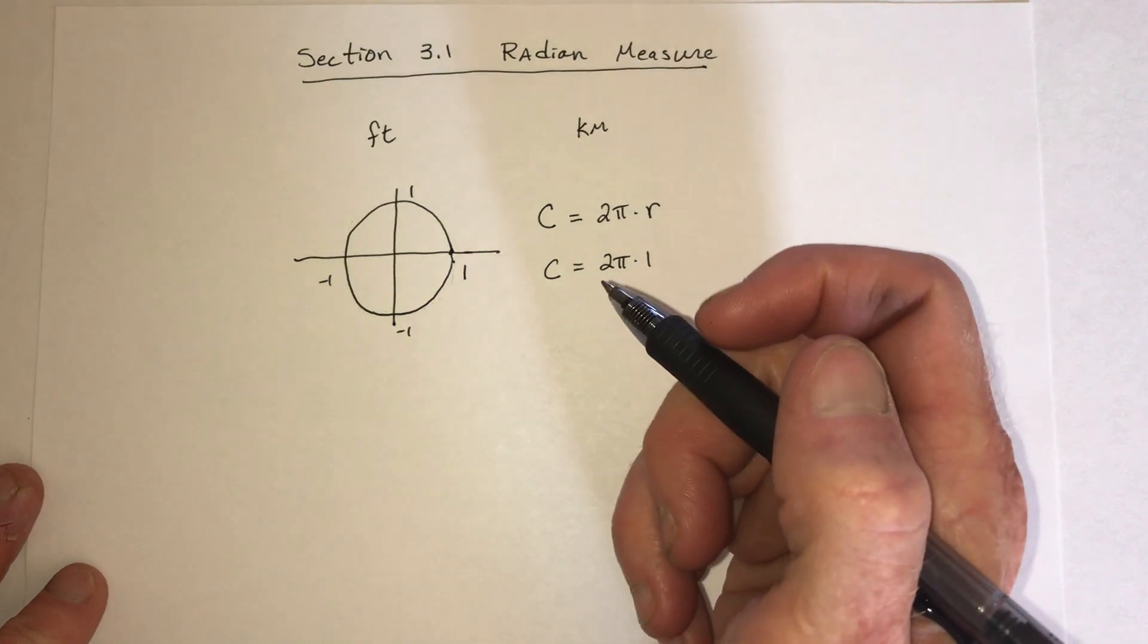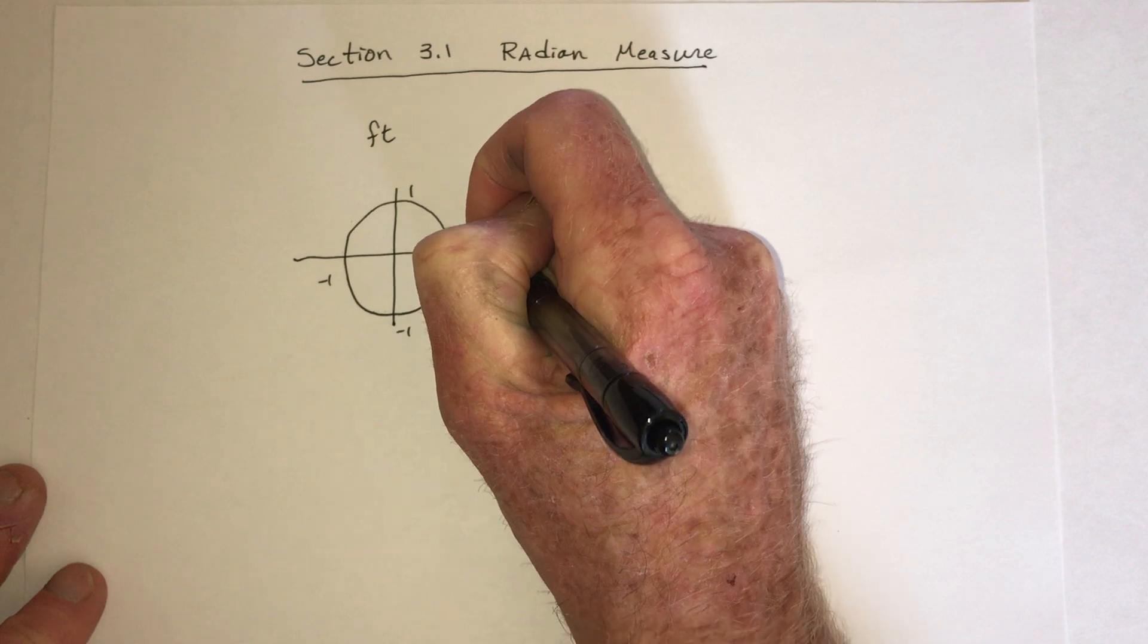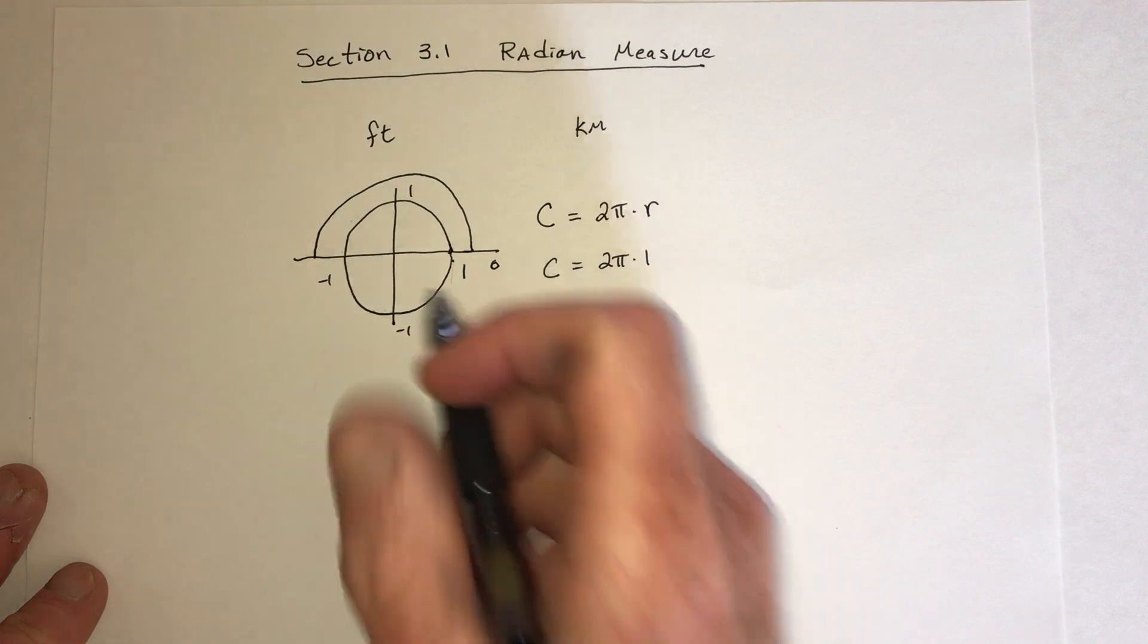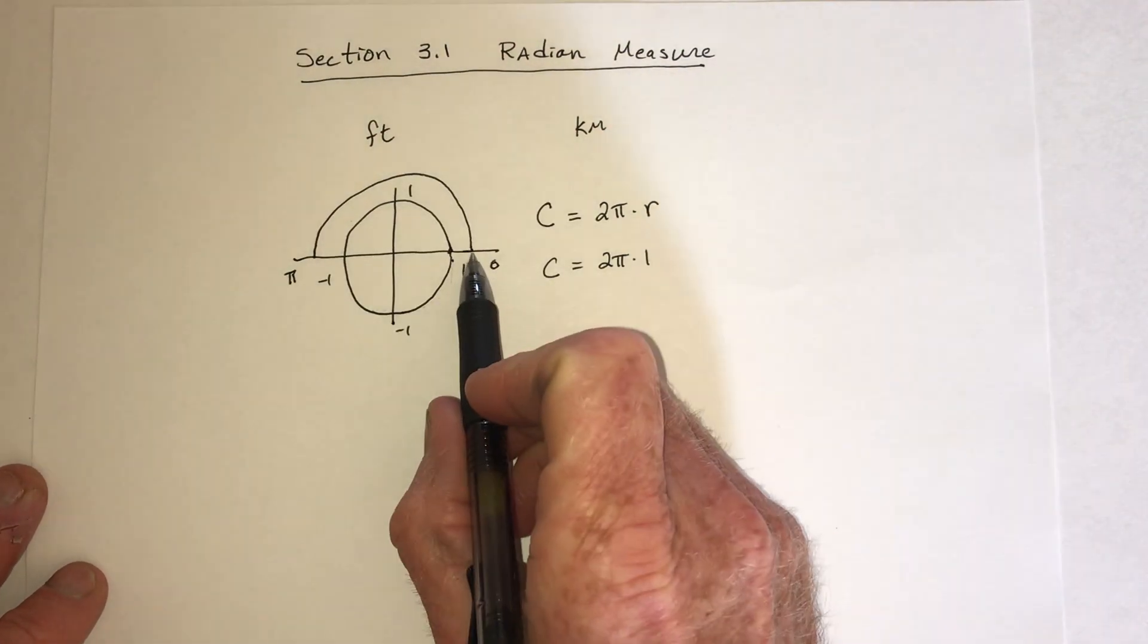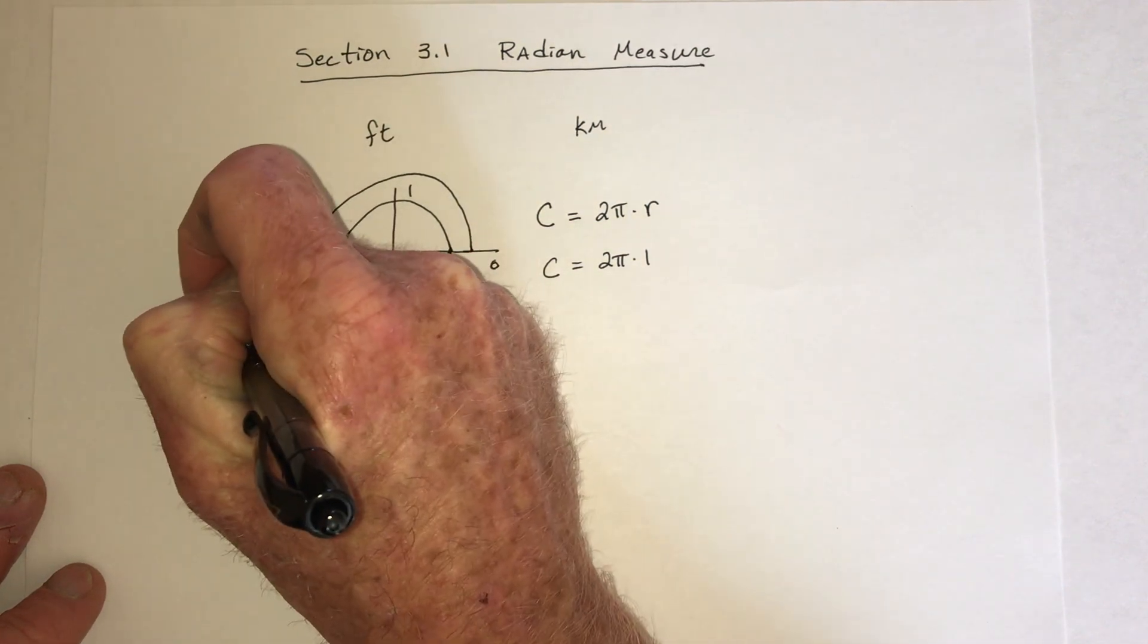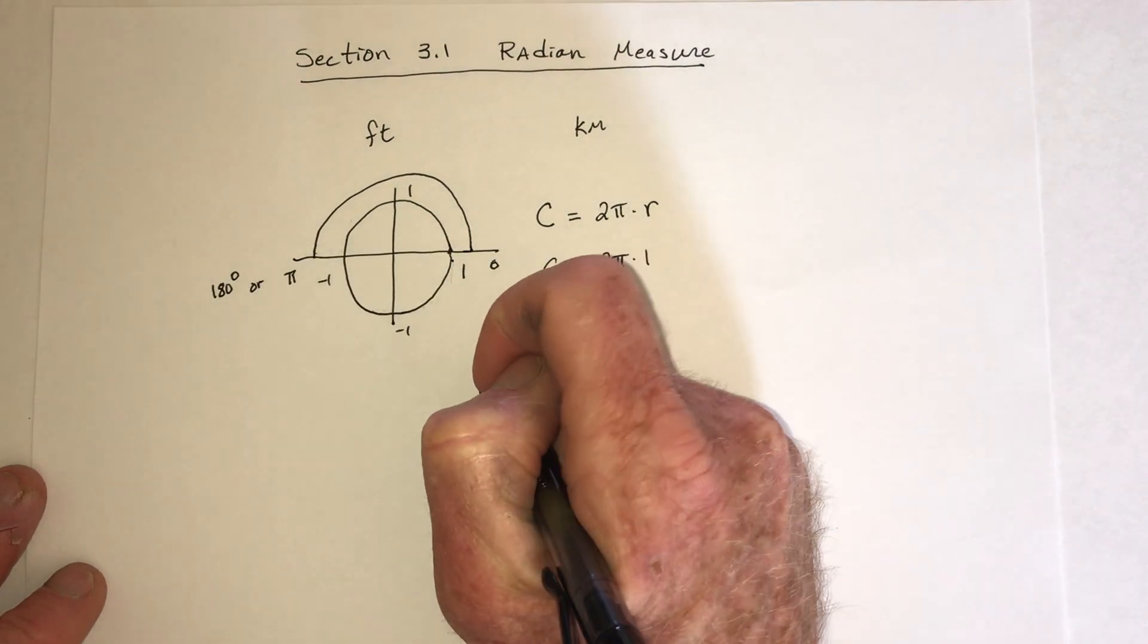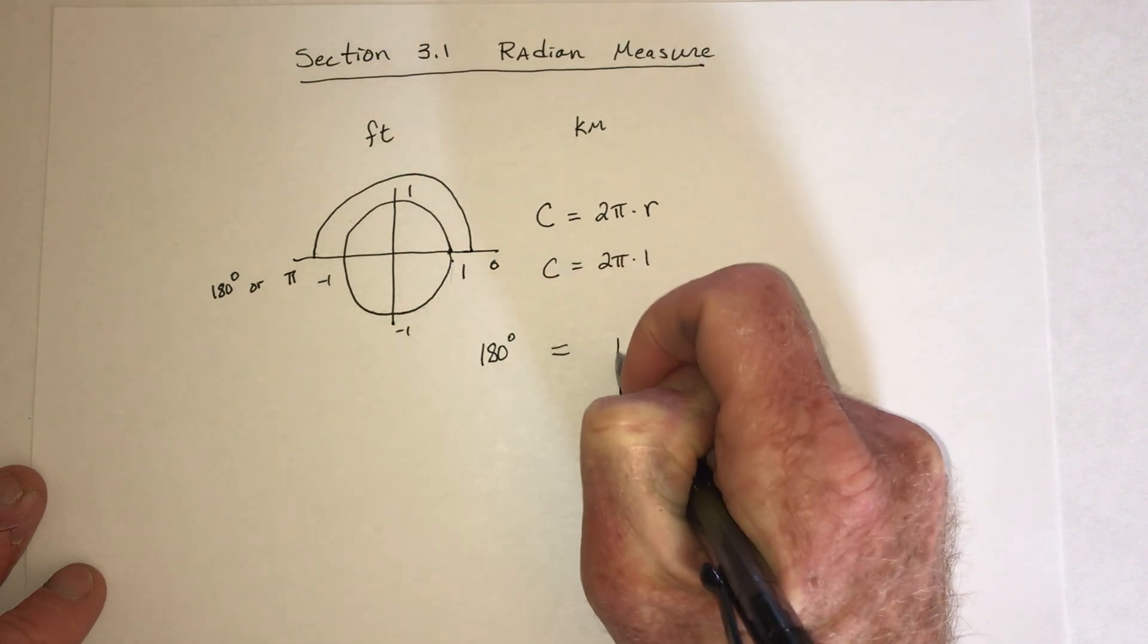So in radians, this would be 0. And then when you go halfway around a circle, that would be half of this. So that would be pi. When you do the same thing with degrees, from here, halfway around a circle, is 180 degrees. So 180 degrees is equivalent to pi.